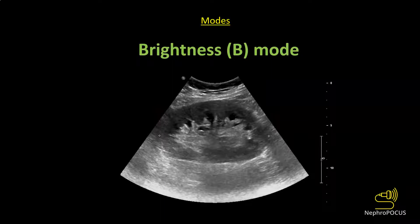The first basic mode is B-mode or brightness mode — the regular grayscale imaging used for most ultrasound purposes. The image is a combination of multiple dots of varying intensity. The scale ranges from complete white to black, with different shades of gray in between — there are actually 256 shades of gray.